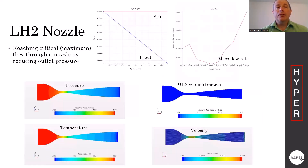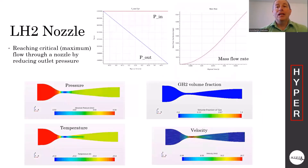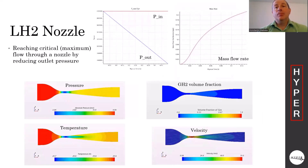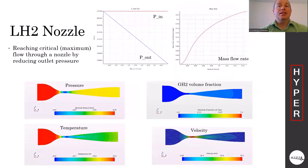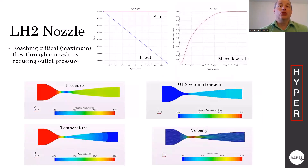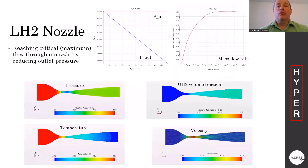And the last simulation will demonstrate high-speed flow of liquid hydrogen through a convergent-divergent nozzle. As we decrease pressure at the outlet, flow rate starts increasing, but later it stabilizes. That means flow reached critical or choked flow condition. You can also observe evaporation of the liquid in the divergent part of the nozzle.